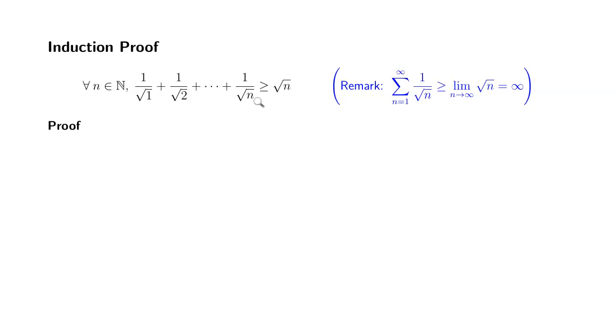Alright, so let's try to establish this inequality using induction. So base case. We're gonna check the base case when n equals 1. Left-hand side is 1 over square root of 1 which is 1 and the right-hand side is square root of 1 which is 1 so 1 is greater than or equal to 1.